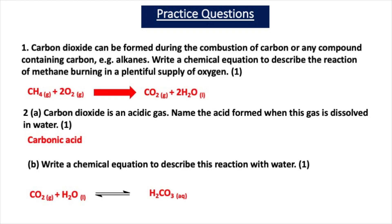For Question 1, write a chemical equation for methane burning in a plentiful supply of oxygen. When a hydrocarbon burns in oxygen you get carbon dioxide and water: CH4 + 2O2 → CO2 + 2H2O — one mark. Question 2A: the acid formed when carbon dioxide dissolves in water is carbonic acid. For Question 2B, write a chemical equation for this reaction: CO2(g) + H2O(l) ⇌ H2CO3(aq) — carbonic acid, where CO2 is a gas, water is a liquid, and carbonic acid is aqueous.